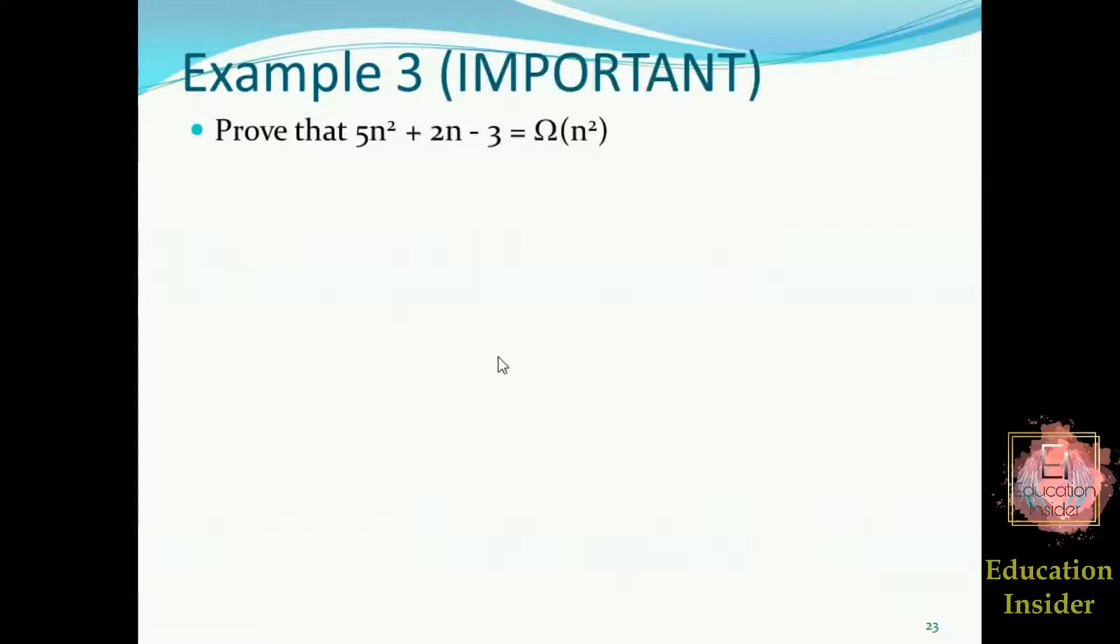Now what minimum value of n we can assume here? If you remember, n must not be negative or must not be 0, so we can assume 1 as the minimum n value and hence we get the value of c as 5. So yes we proved it. This was the simpler one. Now let's move to example number three.